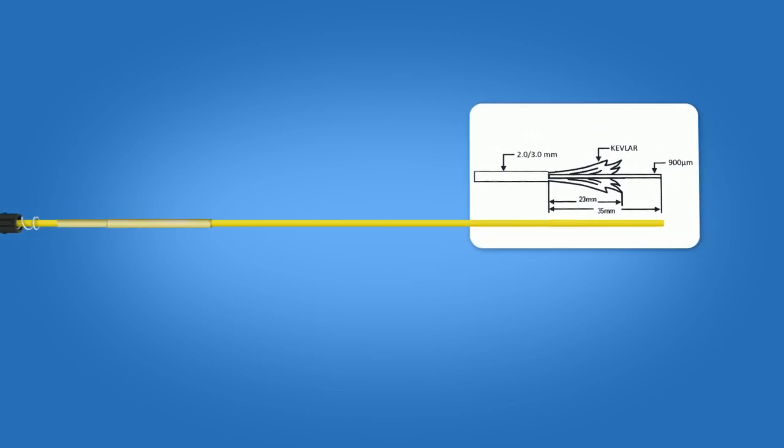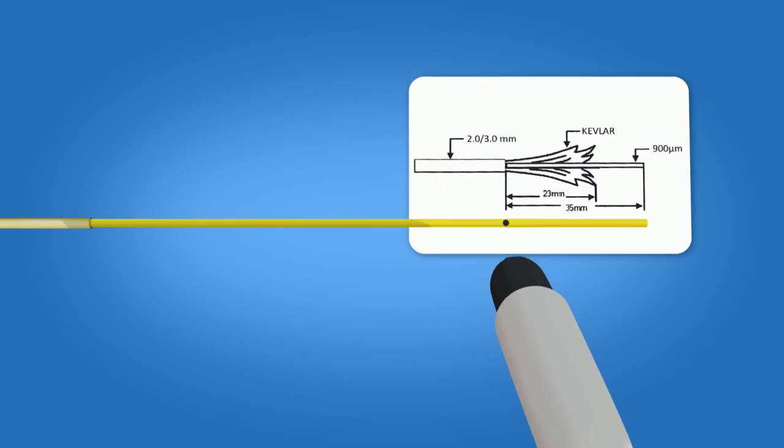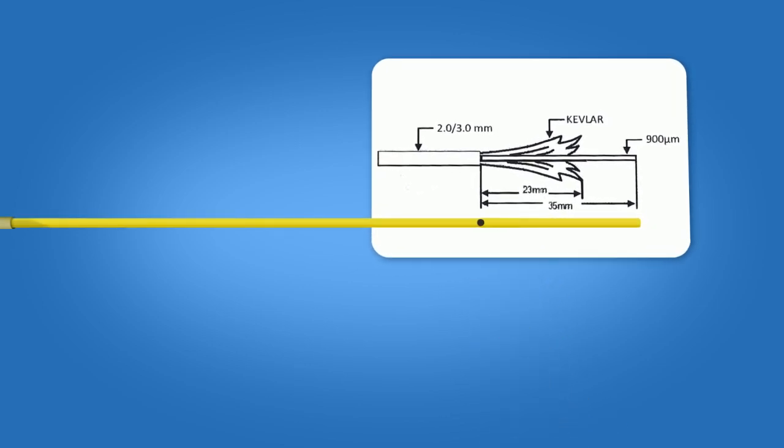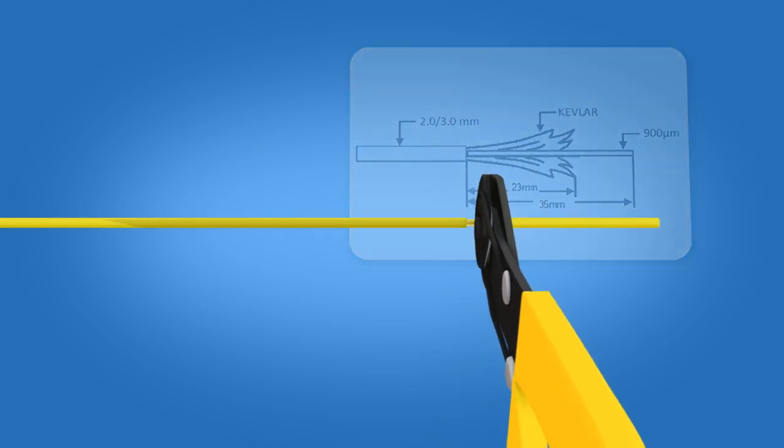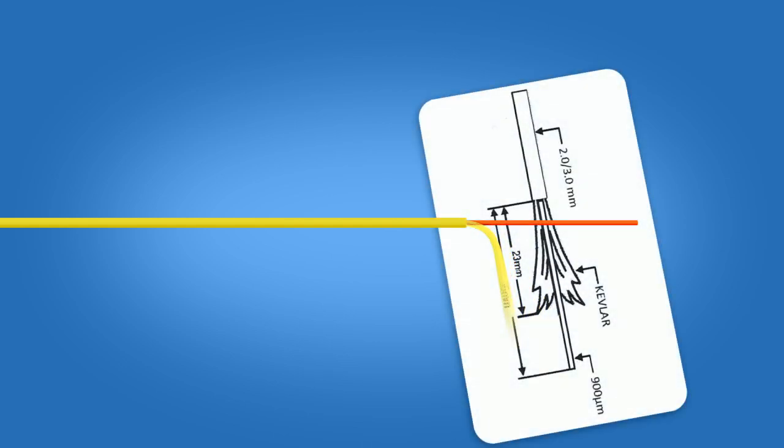Using the template on the front of the connector packaging, mark the cable at 35 millimeters from the end. Strip 35 millimeters of three millimeter jacket from the cable, exposing the Kevlar and 900 micron fiber. Cut the Kevlar to a length of precisely 23 millimeters.